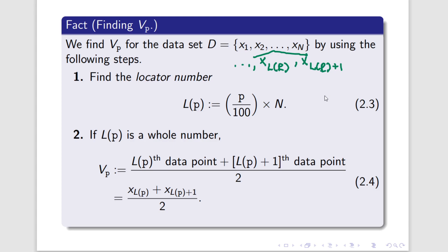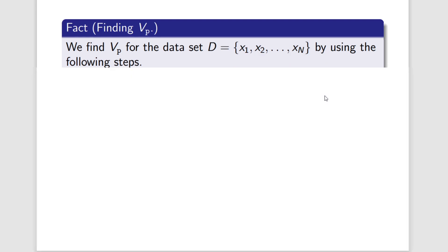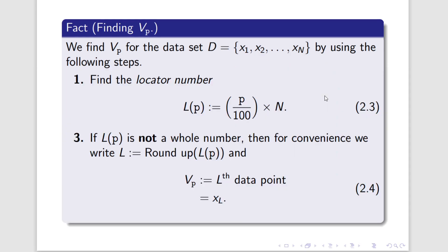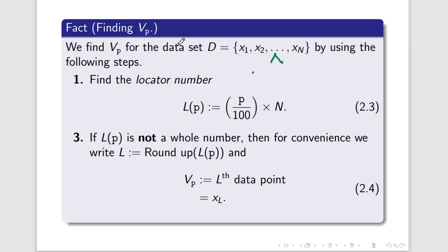There is one other possibility with LP: it might not be a whole number. If LP is not a whole number, we need to round it up to a whole number, and we'll call that whole number L. The Pth percentile in this case is the Lth data point of D, XL. We find the Lth data point by starting at X1, then going to X2, X3, and just keeping on counting until we find XL, which will be somewhere in the middle of D.